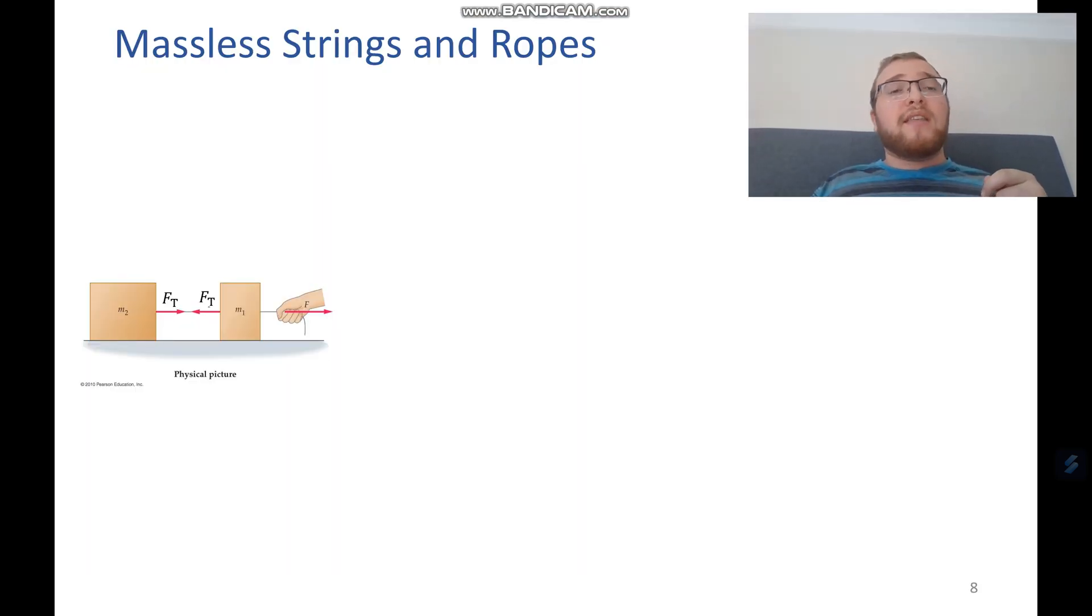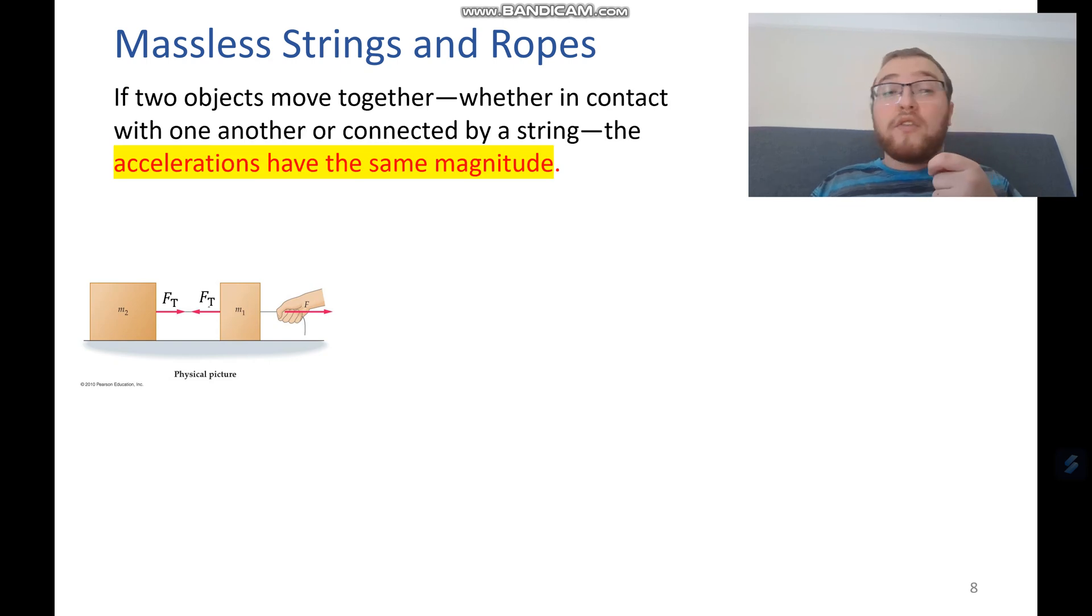So we can go and look, and we can say that these masses in either of these two situations have the same acceleration, or more accurately, the same magnitude of acceleration. So we know that they're going to be accelerating at the same rate. And that's because they're tied together, or they're pushed together. They're just moving at the same rate. That makes intuitive sense to us.